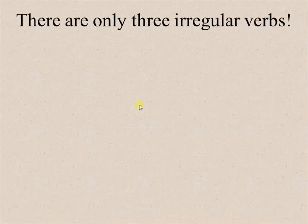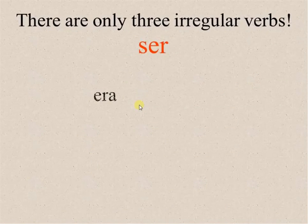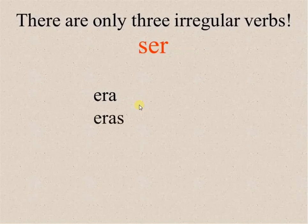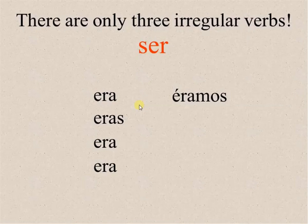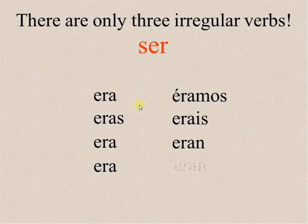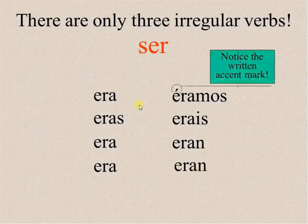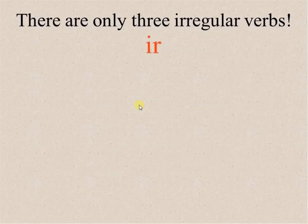There are only three irregular verbs in the imperfect. The first is the verb ser: yo era, tú eras, él o ella era, usted era, nosotros éramos — with an accent mark — vosotros erais, ellos/ellas eran, ustedes eran. Again, accent mark only in the nosotros form.